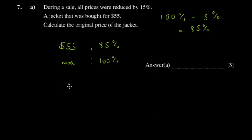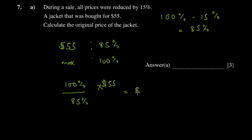By simple proportion, x equals 100 divided by 85, multiplied by $55. You just punch it into the calculator: 100 divided by 85, then multiply by 55. You get $64.70, which rounds to $64.70 to 3 significant figures. So that is the original price of the jacket.